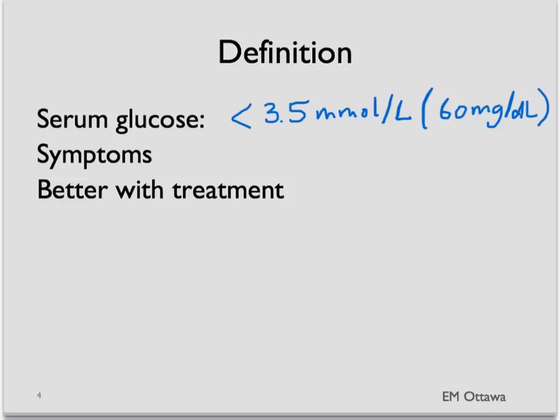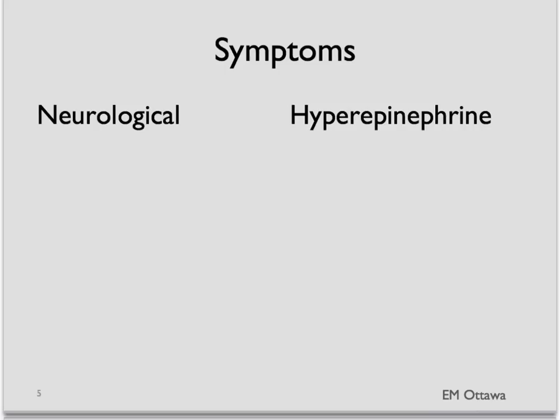Patients who have hypoglycemia should also have some symptoms of hypoglycemia, and once their hypoglycemia is being reversed, their symptoms also get better. Therefore, we need to know the symptoms of hypoglycemia. They are divided into two main categories: neurological symptoms and symptoms due to high epinephrine in the body.